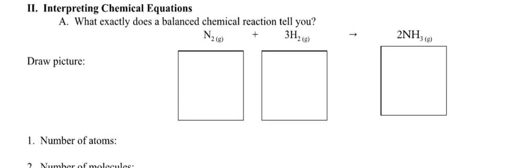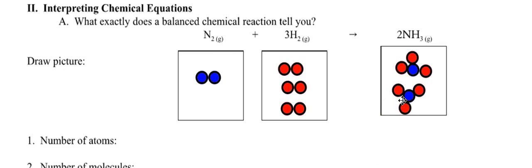So let's check out interpreting chemical equations. What does exactly a balanced chemical reaction even tell you? I can draw a picture of N2. I should have two nitrogen atoms bonded together. The coefficient of N2 is really a one, so I just have one N2. This tells me I need three H2s. Here's one, here's two, and here's three. And now what am I going to make? I'm going to make two molecules of NH3. So I have one nitrogen and three hydrogens, and I have one nitrogen and three hydrogens.